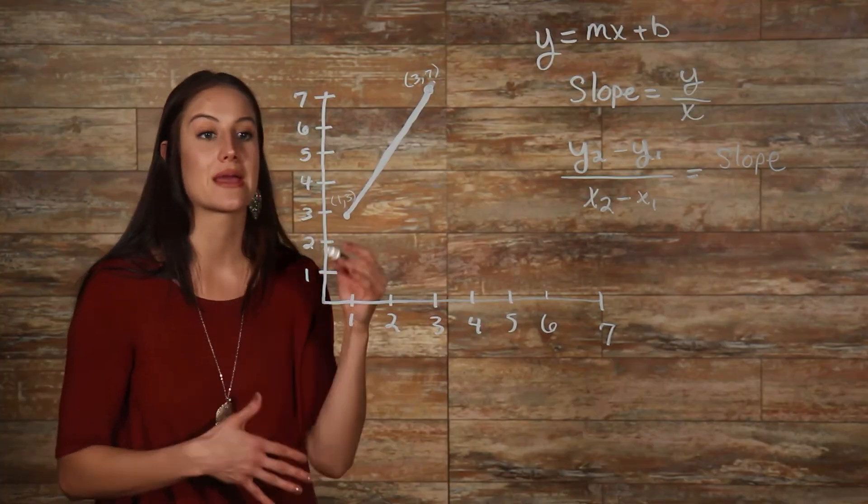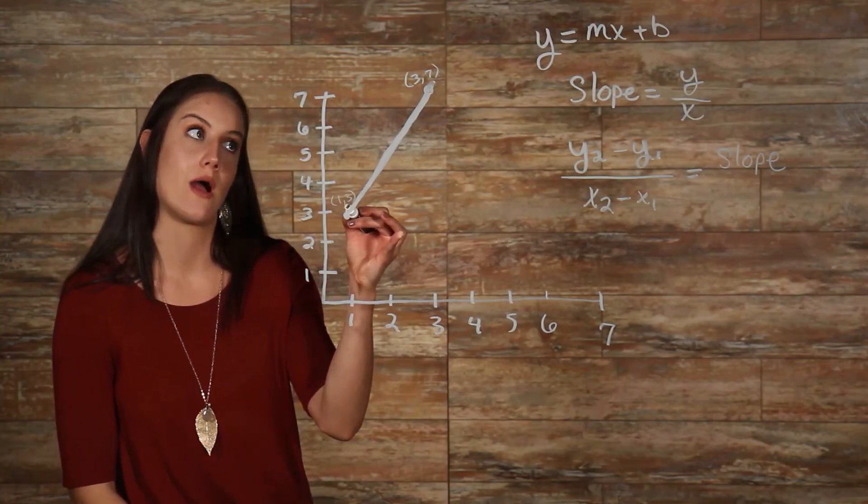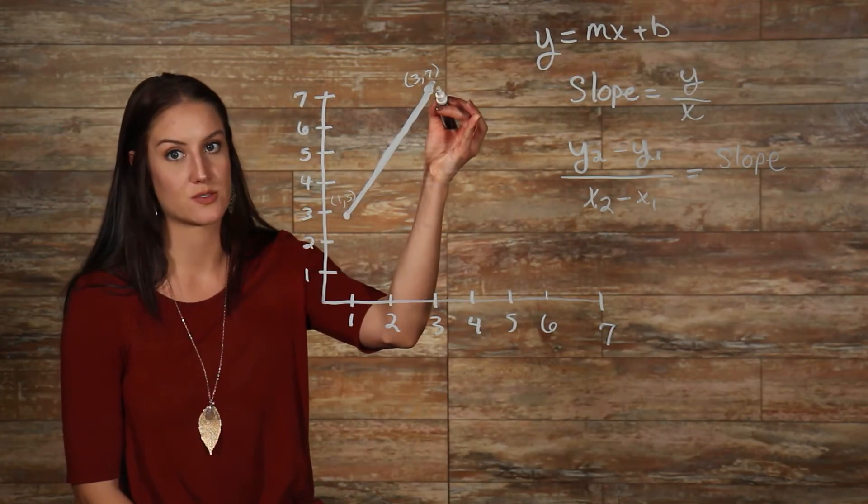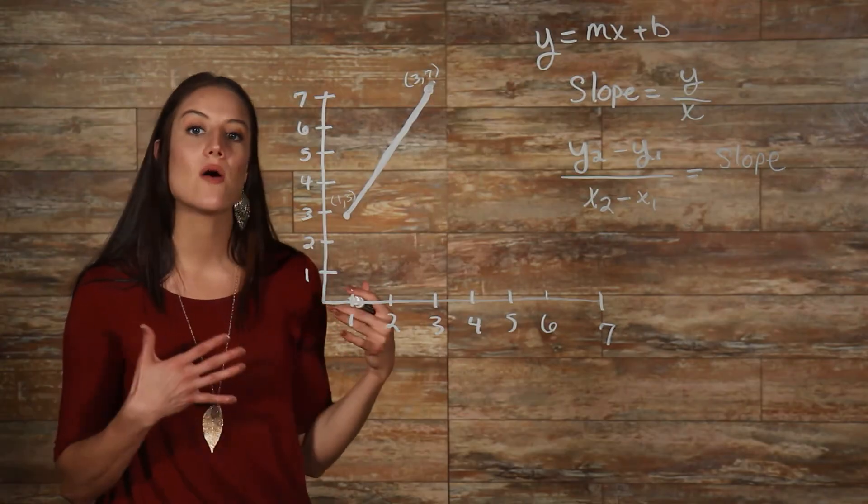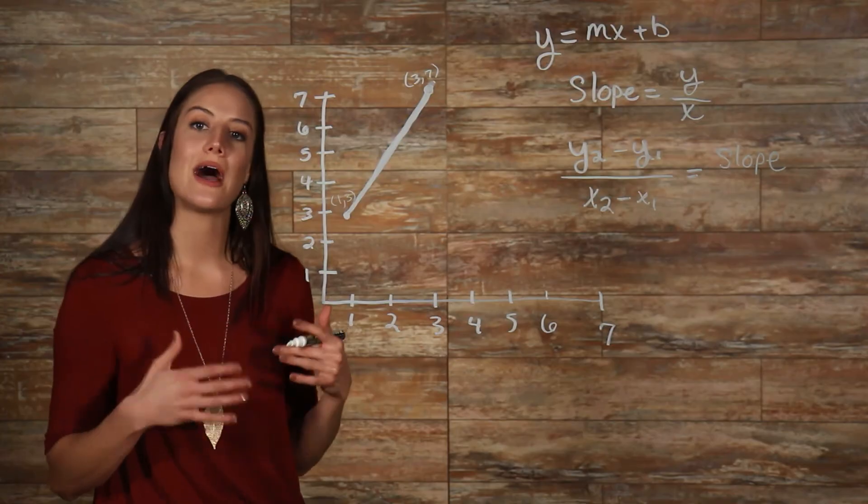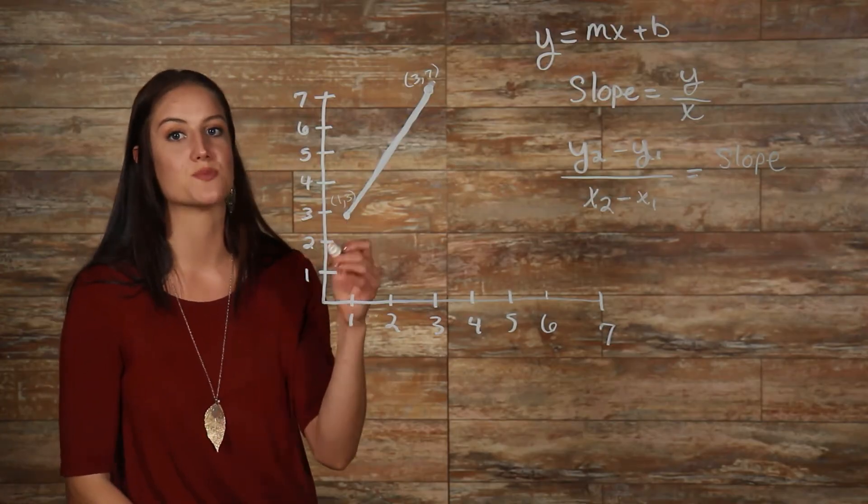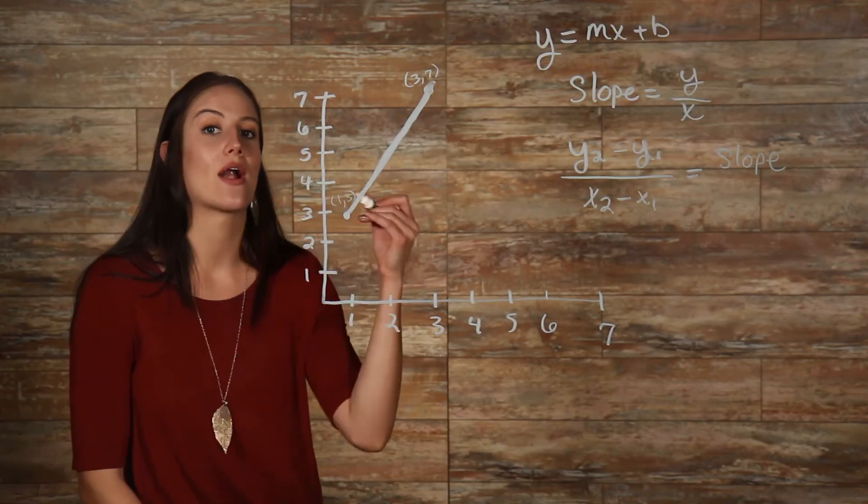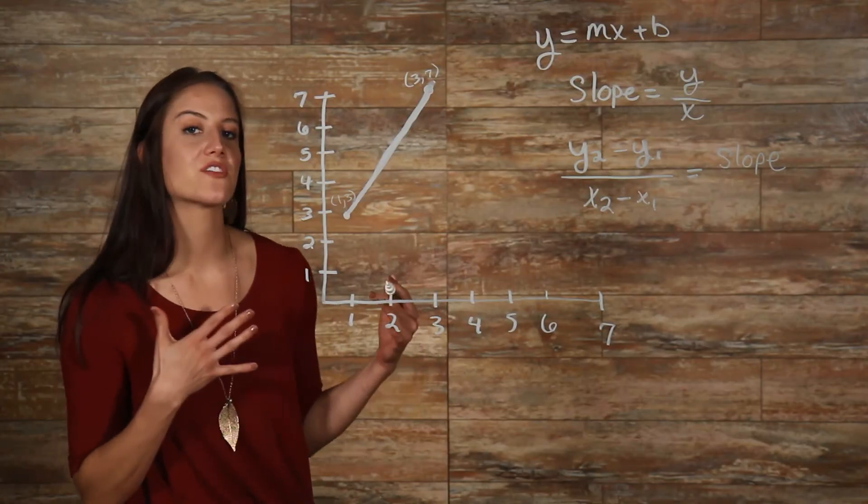What doesn't matter is whether or not I make this set of points my x1, y1, or this set of points my x1, y1. So, now let's pick whichever point we want to be our x1, y1, and for this video, I'll just say that 1 3 will be our x1, y1, which makes 3 7 our x2, y2. Now, let's plug in our values.